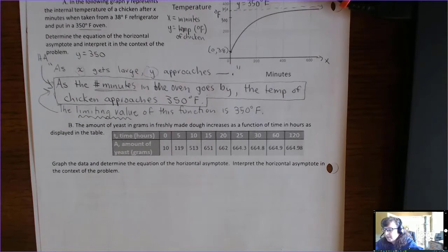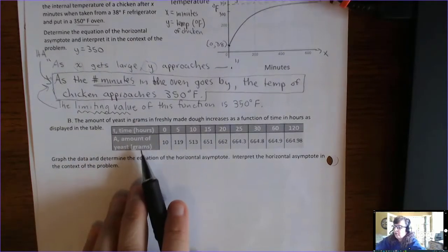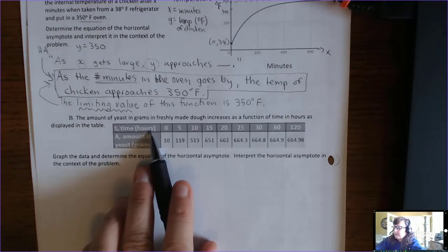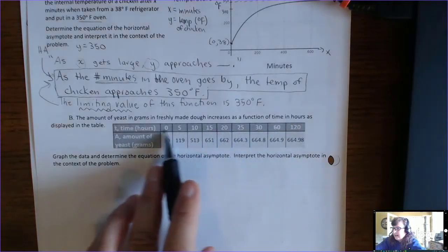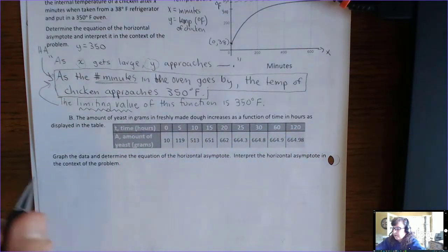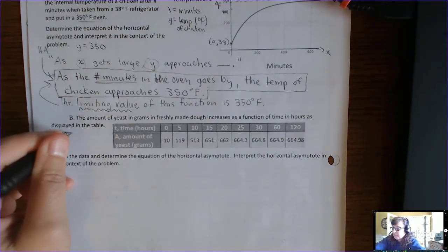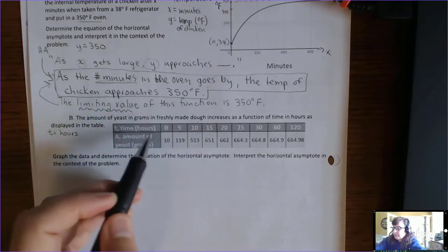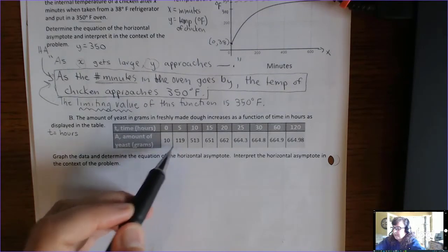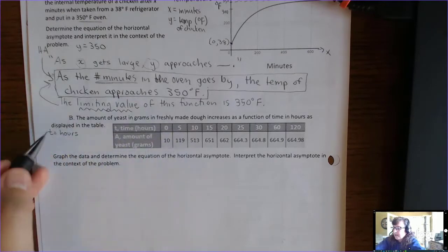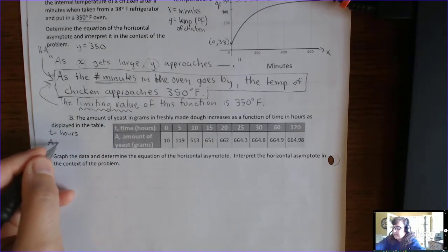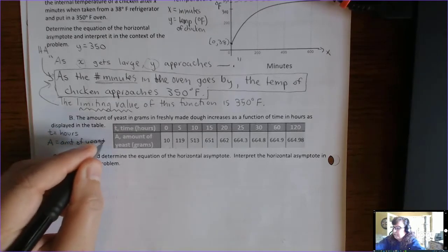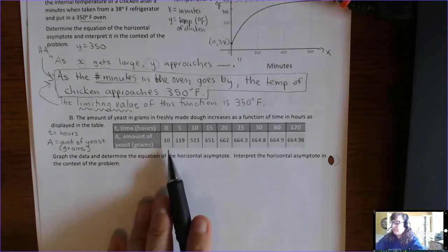Here's another problem: the amount of yeast in grams in freshly made dough increases as a function of hours, as displayed in a table. We write a math-English dictionary. The input variable is always listed at the top of the table. The input is time t in hours — the independent variable. The output variable is a, the amount of yeast in grams — the dependent variable.